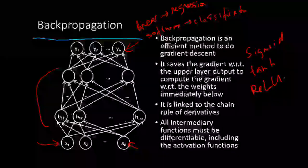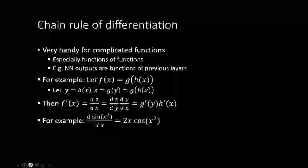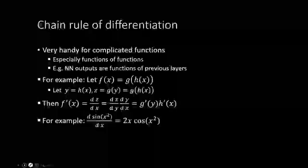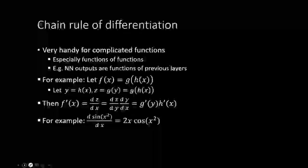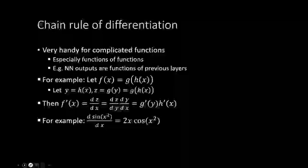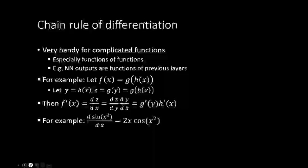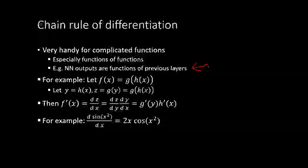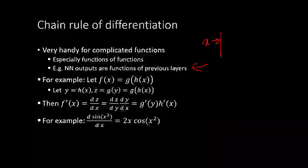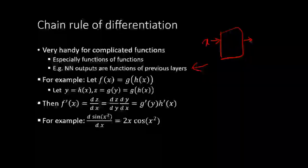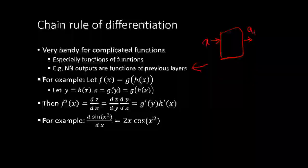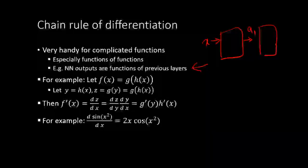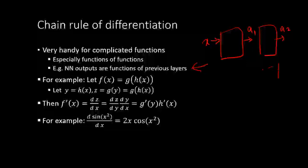Now let's look at how the back propagation algorithm works. It is based on the chain rule of differentiation. If you have functions nested inside functions, it is handy to use the chain rule. The layers of a neural network are functions of a function. You can think of x as input into some layer, what comes out is a1, and that a1 becomes input to the second layer, what comes out is a2, and so on.